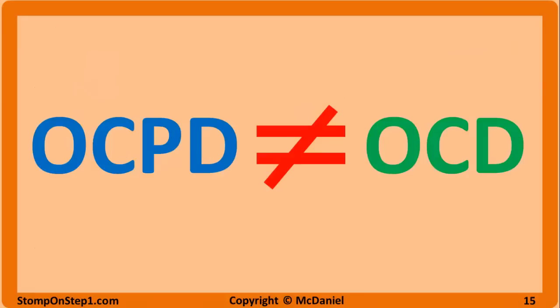Obsessive-compulsive personality disorder should not be confused with the anxiety disorder obsessive-compulsive disorder, or OCD. The two are distinct conditions even though there is some overlap and the names are very similar. OCD patients have insight while people with OCPD do not — in OCD they view their thoughts as abnormal, unwanted, and distressing, while in OCPD they view their way of thinking as normal and beneficial. A person with OCPD may seek help due to interpersonal problems, but not about their way of thinking because they don't realize they have a problem. People with OCPD also lack the repetitive actions like washing hands over and over again that are classically seen in OCD.